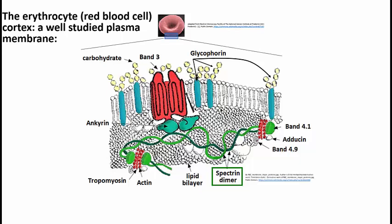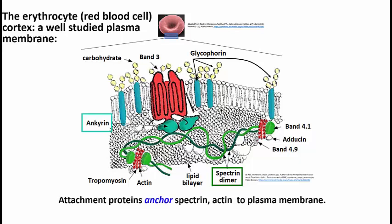The spectrin is not a membrane protein, but it is a cytoskeletal protein — a protein that's part of a skeletal framework that's going to give the cell its shape. But it has to be held to the membrane, and it's held to the membrane by attachment proteins. Anchorin is an example of one of these proteins that is a membrane protein, and that does anchor spectrin to the membrane.